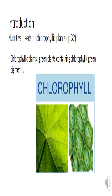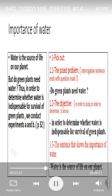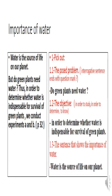Chlorophyllic plants are the green plants that contain chlorophyll, which is a green pigment. Chlorophyll is found in structures called chloroplasts, inside the cells of green plants, and it plays a role in photosynthesis, which we will see in Activity 3. The importance of water: water is the source of life on our planet. But do green plants need water? In order to determine whether water is indispensable for the survival of green plants, we conduct experiments A and B.